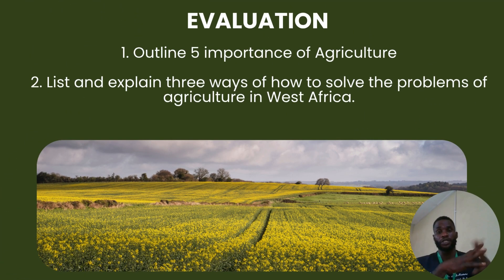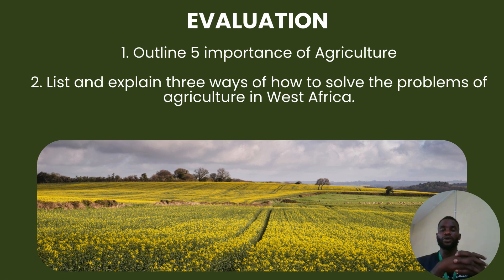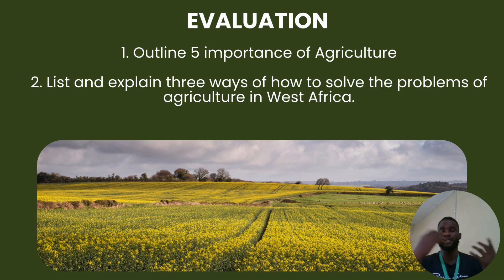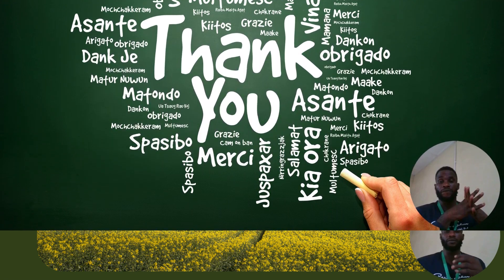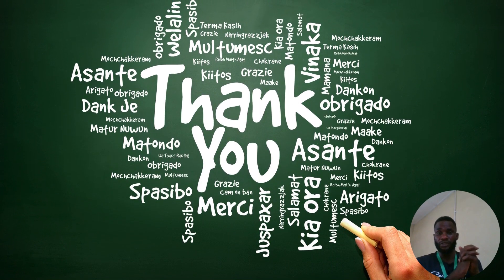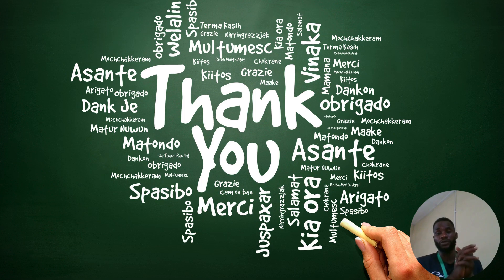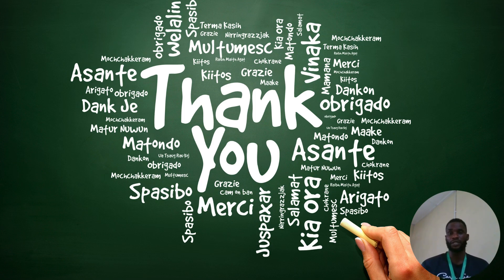Evaluation time: outline five importance of agriculture. Number two, list and explain three ways of how to solve the problems of agriculture in Africa. Thank you all, I appreciate this.